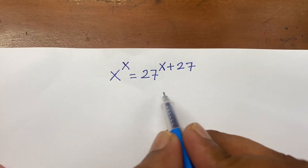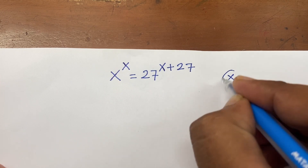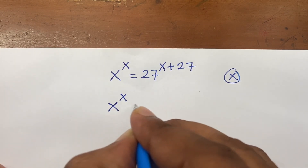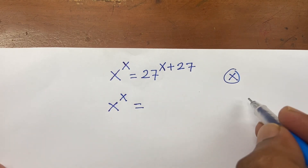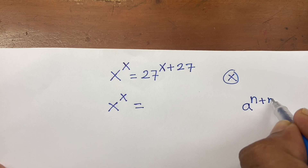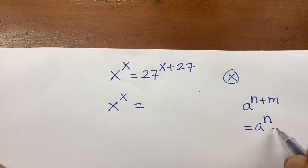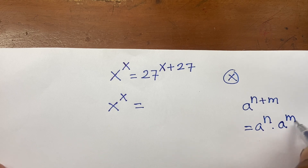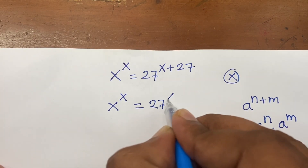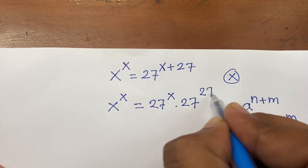How to solve x to the power x equals 27 to the power (x plus 27) — find the value of x. Here, x^x can be expanded using the rule a^(n+m) = a^n times a^m. So we can write 27^(x+27) as 27^x times 27^27.